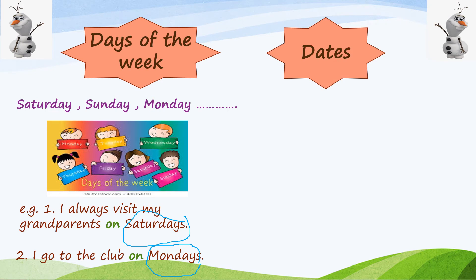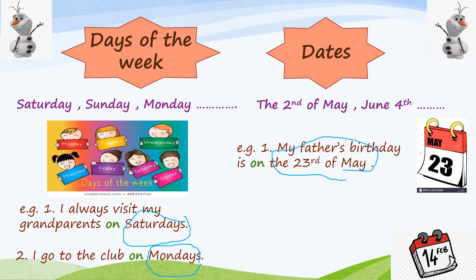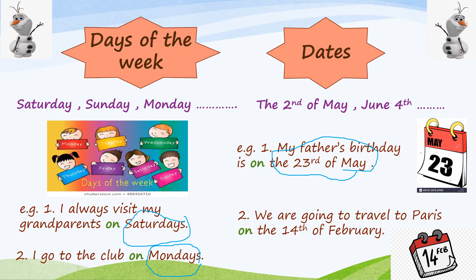Do we put 'on' before days of the week only? No, of course — we have to put it before dates also. For example, my father's birthday is on the 23rd of May, so my date is the 23rd of May. Number two: we are going to travel to Paris on the 14th of February. My date is the 14th of February, and I have to put 'on' before it.